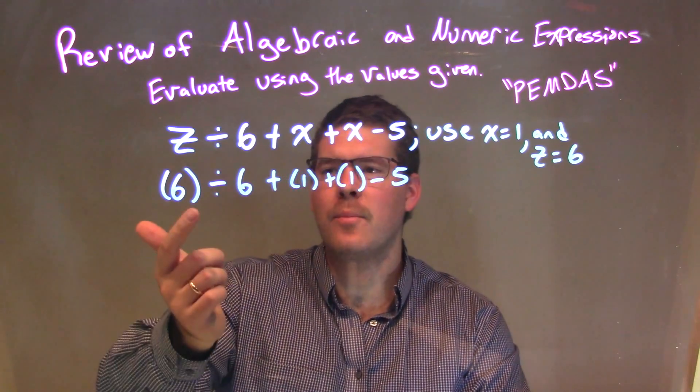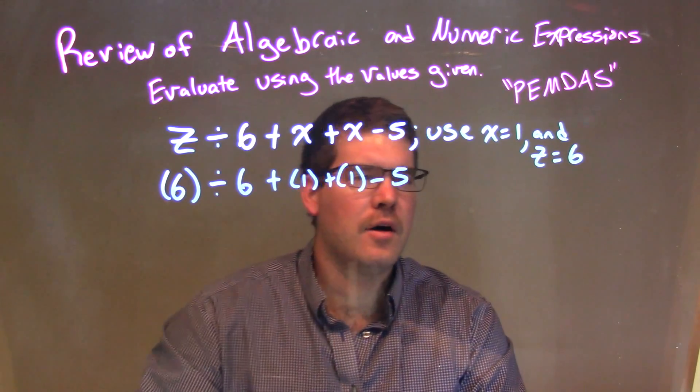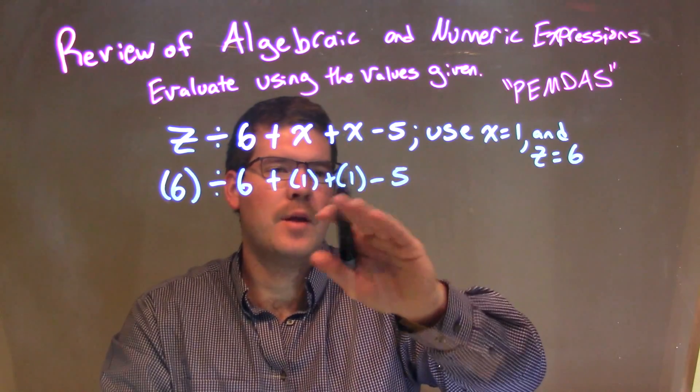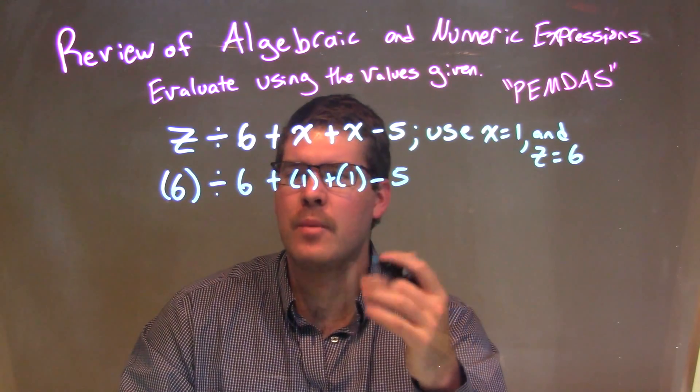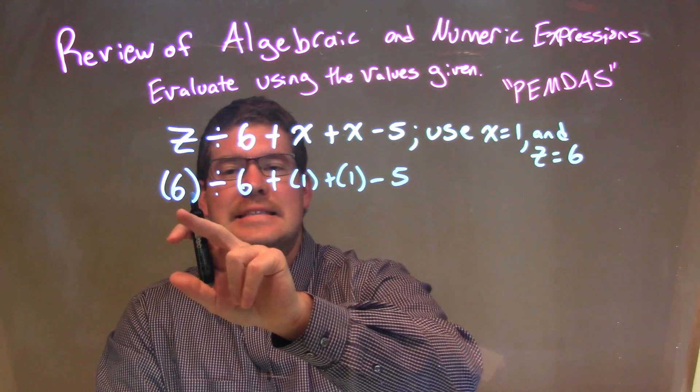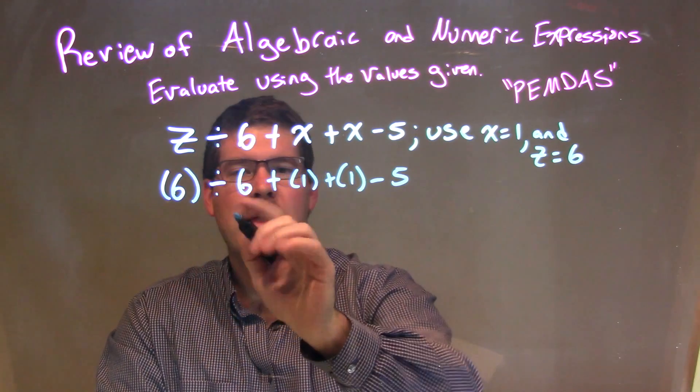Okay, so I put parentheses around the variables when I substitute them to have the number. So let's follow our order of operations, division first. 6 divided by 6 comes first, that is just a 1.